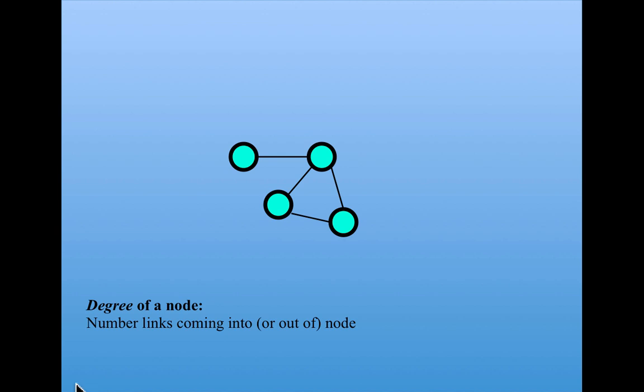A new term is the degree of a node. This is the number of links coming into a node or going out of a node. For example, this node here has degree of 1 because there's only one link emanating from it, whereas this node has degree 2 since it has two links coming out of it. Similarly, this node has degree 2 and this node has degree 3.